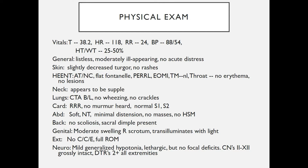His height and weight are between the 25th and 50th percentile. In general, he appears listless and moderately ill-appearing but in no acute distress. Skin exam shows slightly decreased turgor but no rashes. HEENT is essentially normal. His neck appears to be supple. Lungs are clear to auscultation bilaterally. Cardiac: regular rate and rhythm with no murmurs. Abdomen is soft, non-tender, with some minimal distension, no masses, and no hepatosplenomegaly. Back exam shows no scoliosis but there is a sacral dimple present.